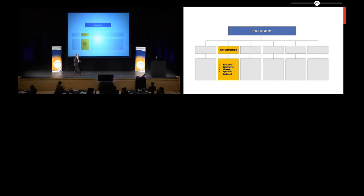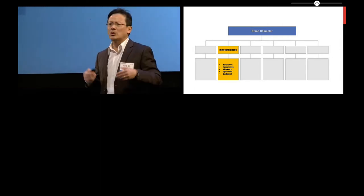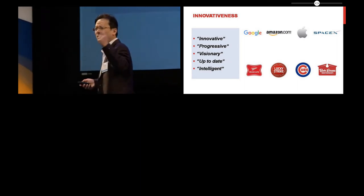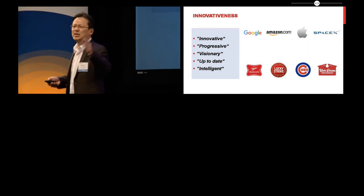The first one that we found is that strong character brands, some of them rest on the fact that they are innovative. So when consumers look at those brands they say, that brand is innovative, it's progressive, it's visionary, it's up to date, it's smart. These are the kind of brands that stand out to us.